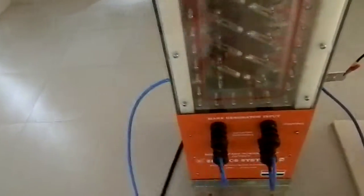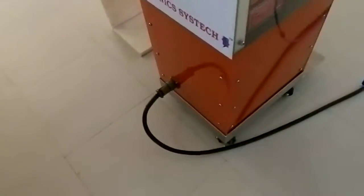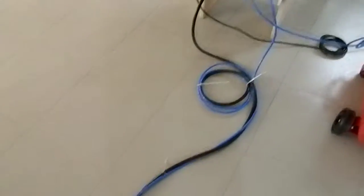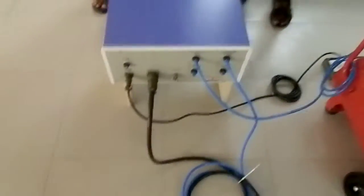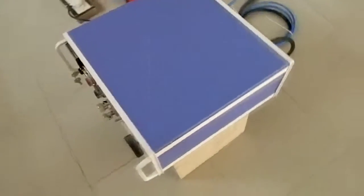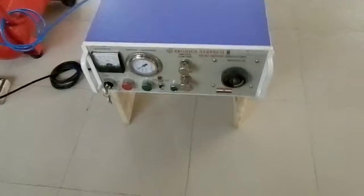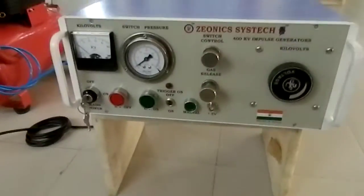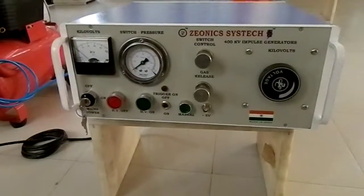The generator has a cable coming out from the rear side which is the control cable. This control cable with gas connection comes to the control panel.